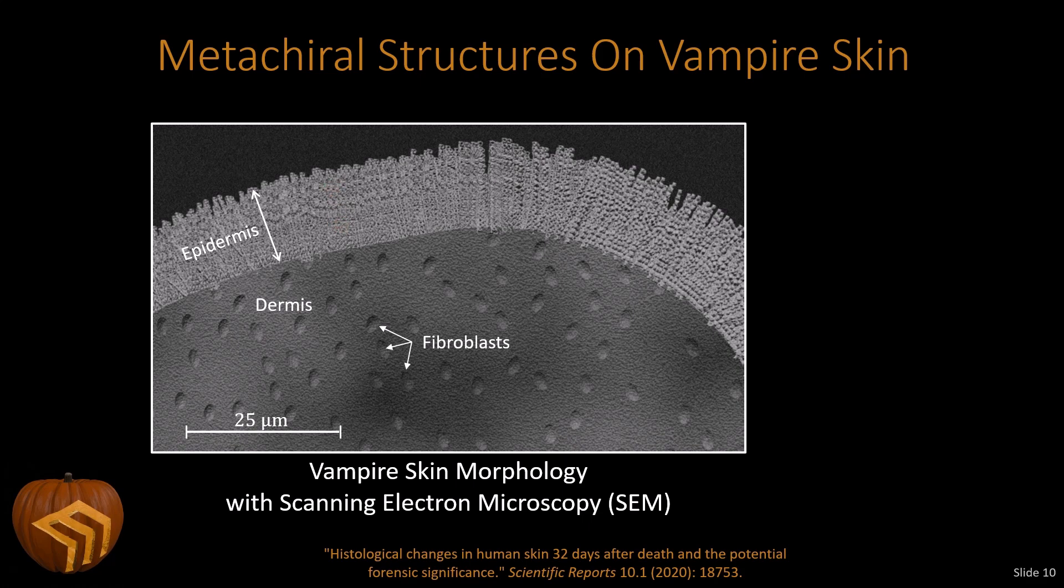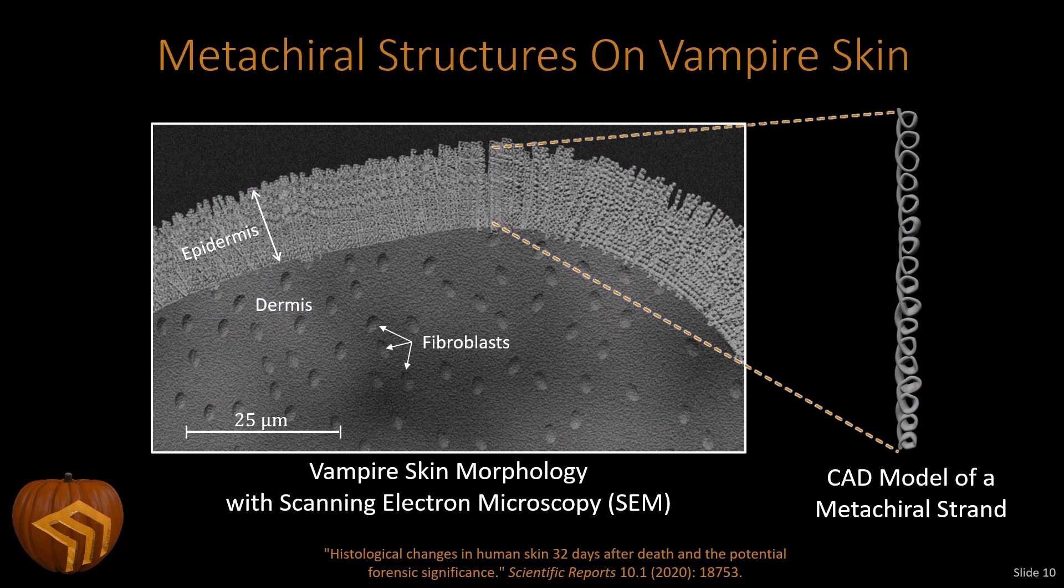Now during death, the cell membranes normally break down. This is called cell lysis. But vampires need to stay intact. So during the vampiric transition, the cell lysis is prevented by a strengthening of the cell membranes. So we have this combination of dehydration and strengthening of the cell membranes that ends up forming these strands of loops in the epidermis layer.